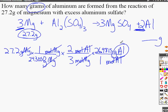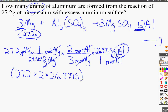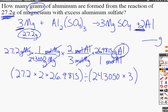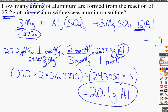All that's left is to put this into the calculator. A helpful tip: enter everything in one step—multiply all numerators together: 27.2 times 2 times 26.9815, then divide by the denominators in parentheses: 24.3050 times 3. This avoids rounding errors along the way. We only round in the final answer. With 27.2 having three significant figures, the answer is 20.1 grams of aluminum from this reaction.